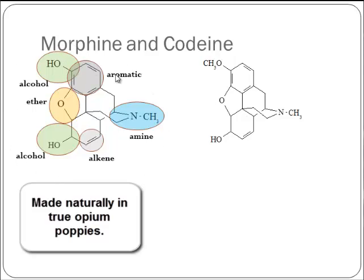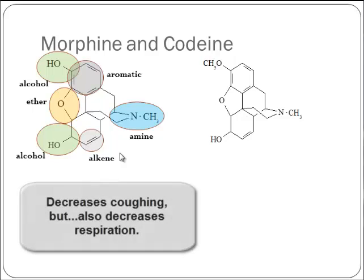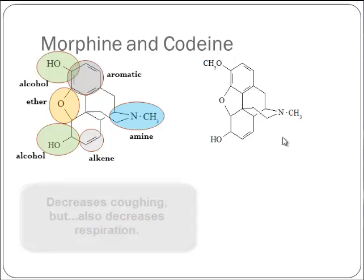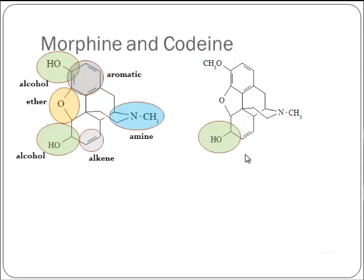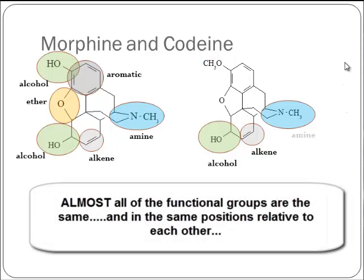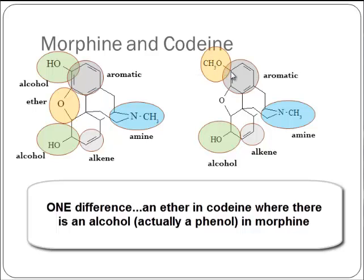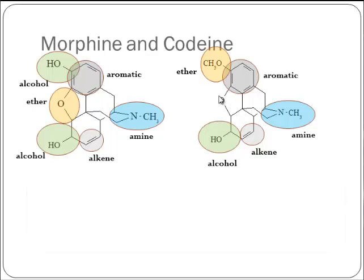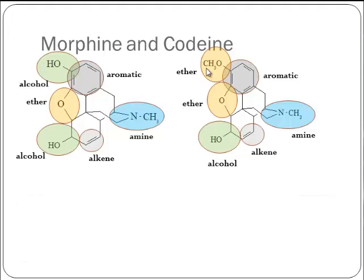Opium poppies make morphine naturally. It's a fantastic painkiller, but unfortunately addictive. It also has antitussive behavior — it can reduce cough — but it reduces respiration too, which is a negative. What about codeine? Opium poppies also make codeine. Comparing functional groups to morphine: codeine has an alcohol, the same alkene, the same tertiary amine, and an aromatic. Here's a key difference — morphine has an alcohol off the aromatic ring, while codeine has C single bond O-C — an ether off the aromatic ring. Then there's one more ether, C-O-C.